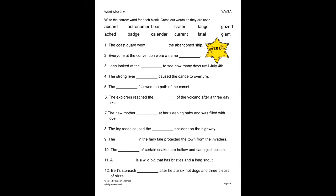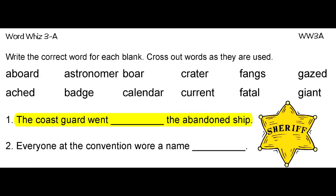Here, the student will write the correct word for each blank. Cross out words as they are used. Let's do number one. The Coast Guard went blank the abandoned ship. Since we know aboard fits best here, we will write the word neatly in the blank.